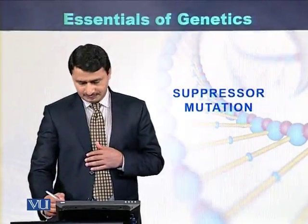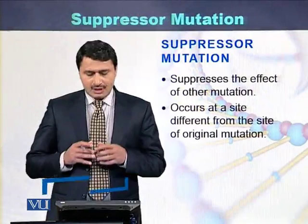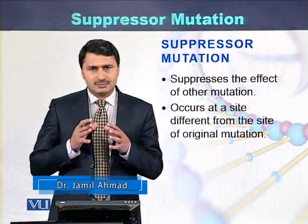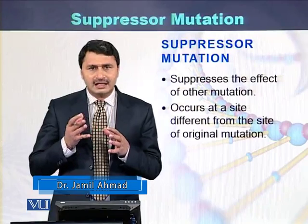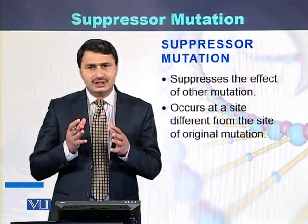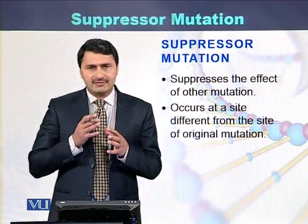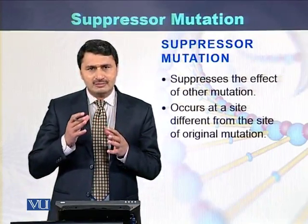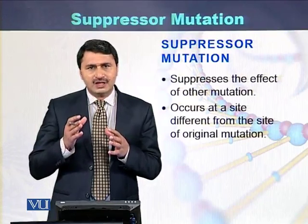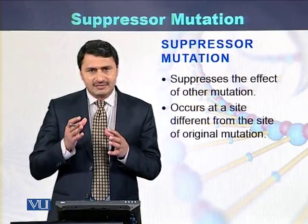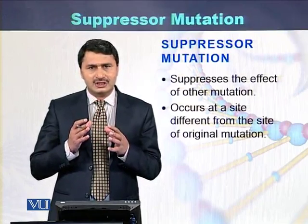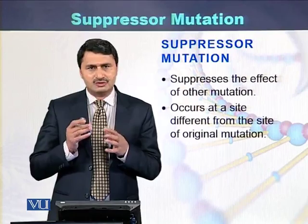Suppressor mutations are those mutations that suppress the effect of another mutation. Usually in this case there are two mutations: one mutation at one point while the second mutation is present on another point. One of the mutations suppresses the effect of the other mutation. If there is such a phenomenon, it is called a suppressor mutation.